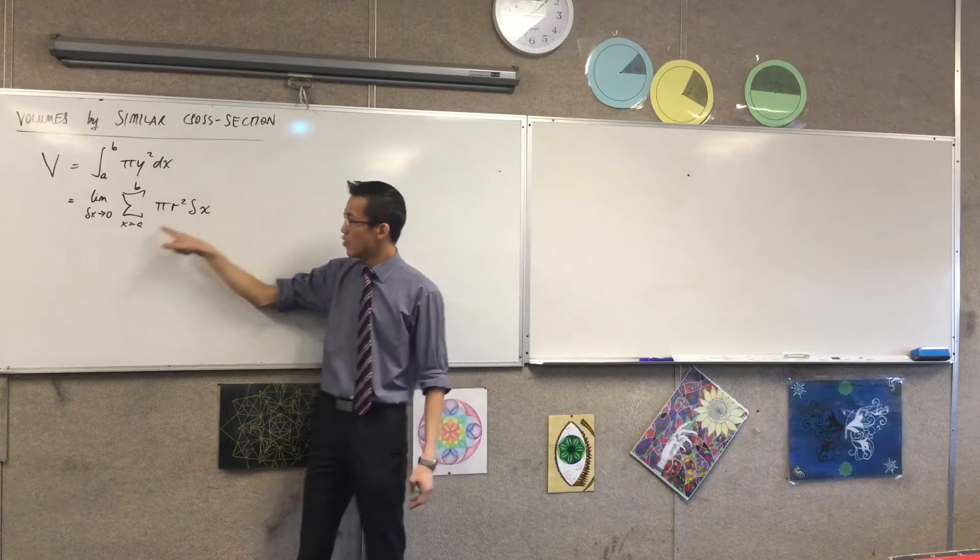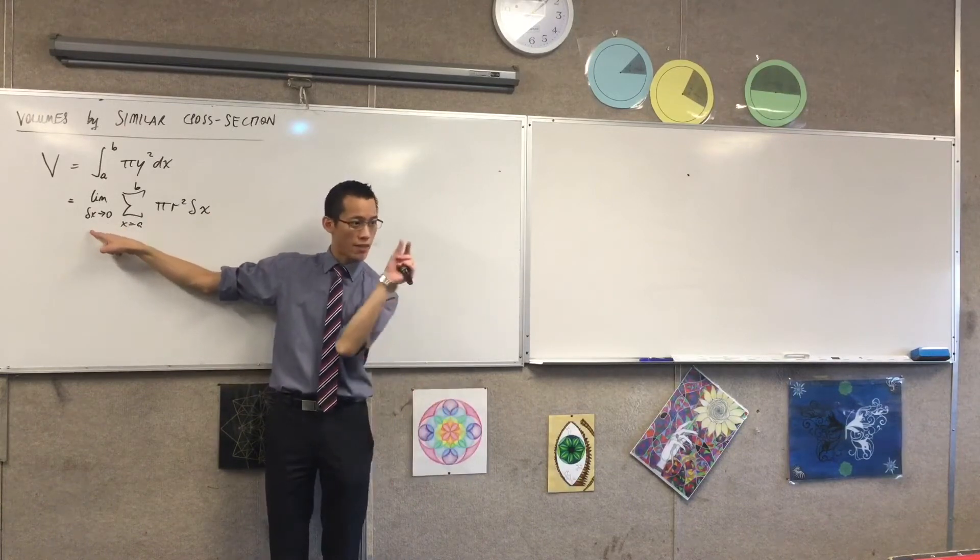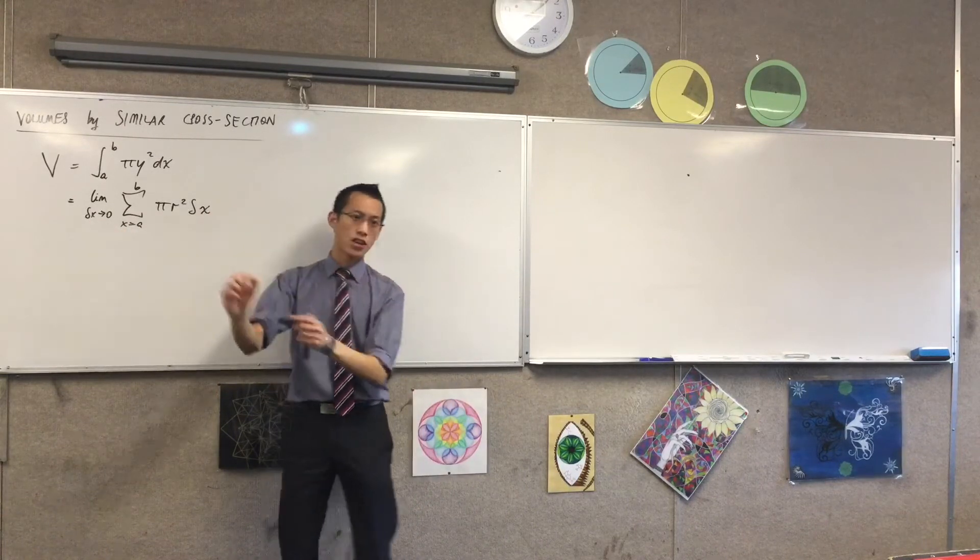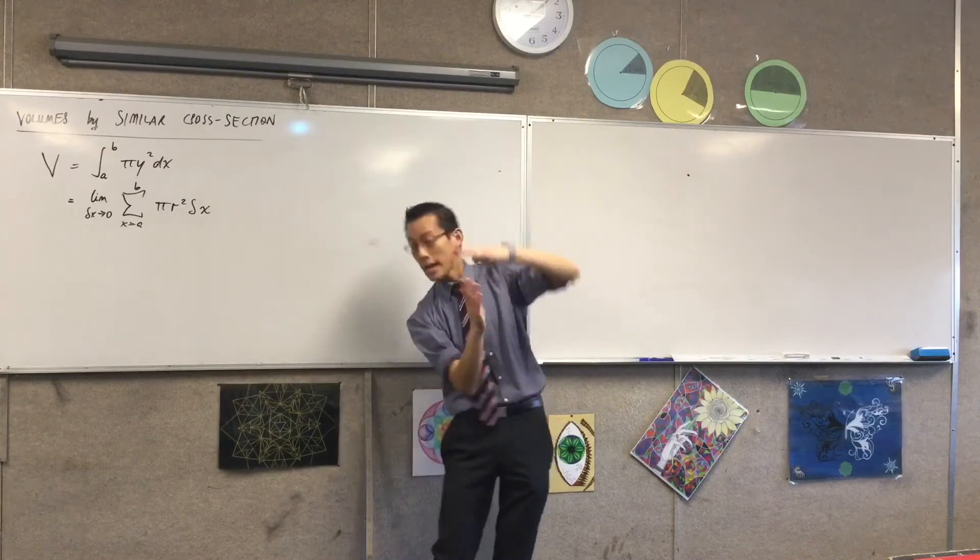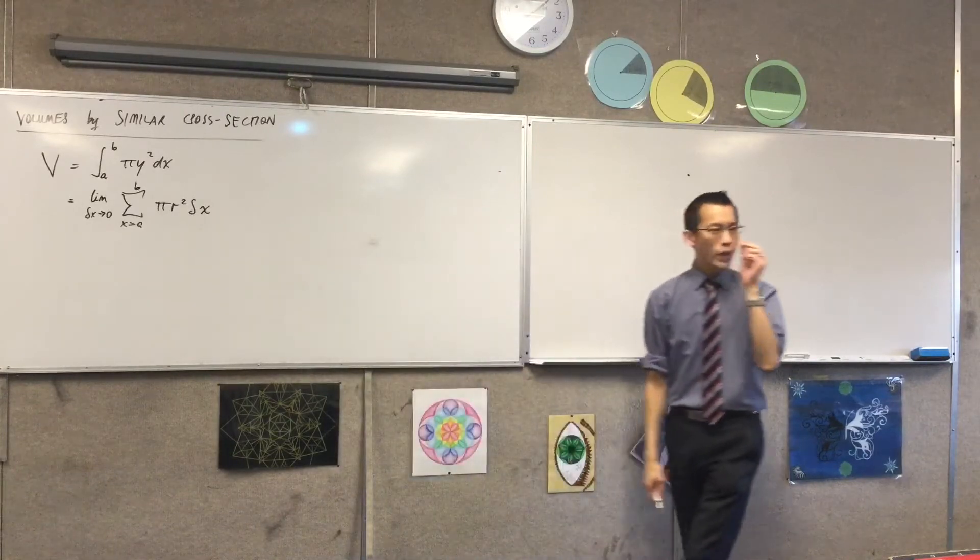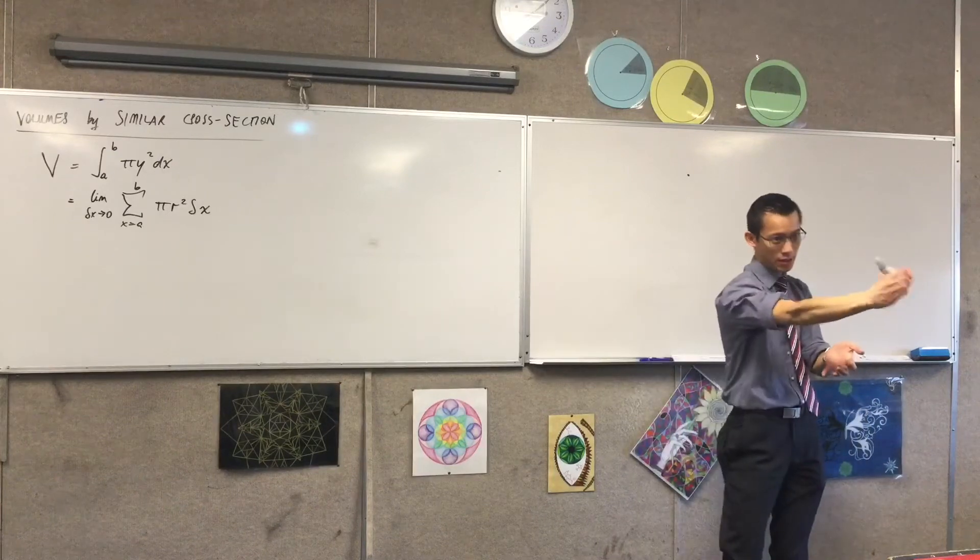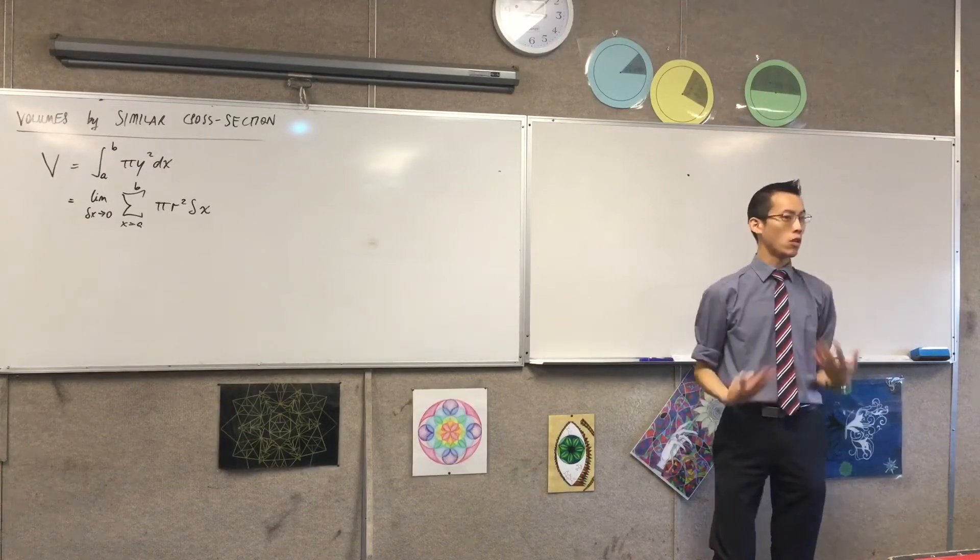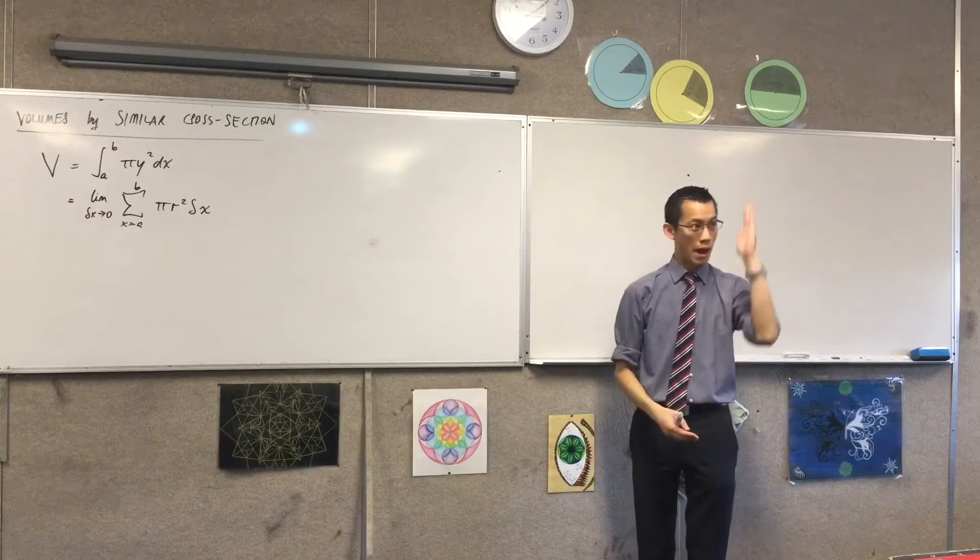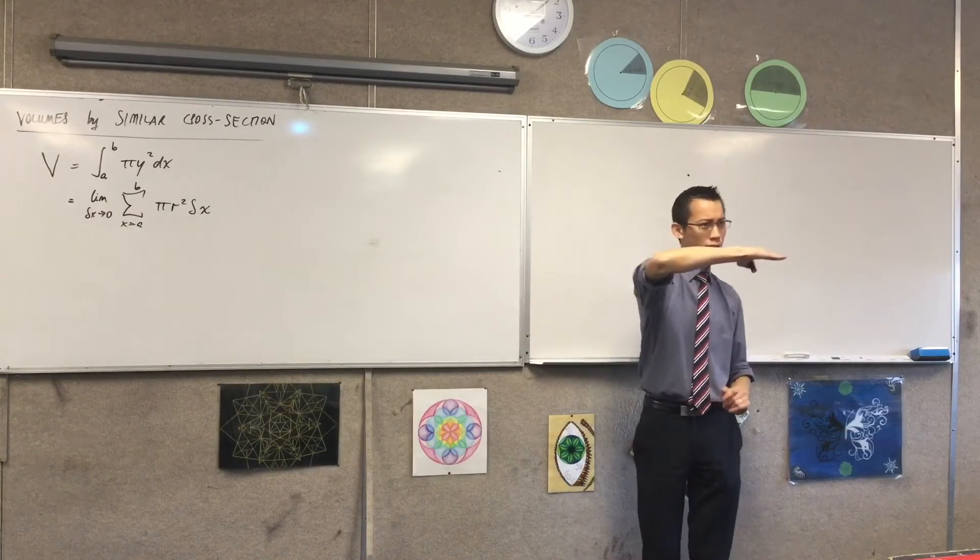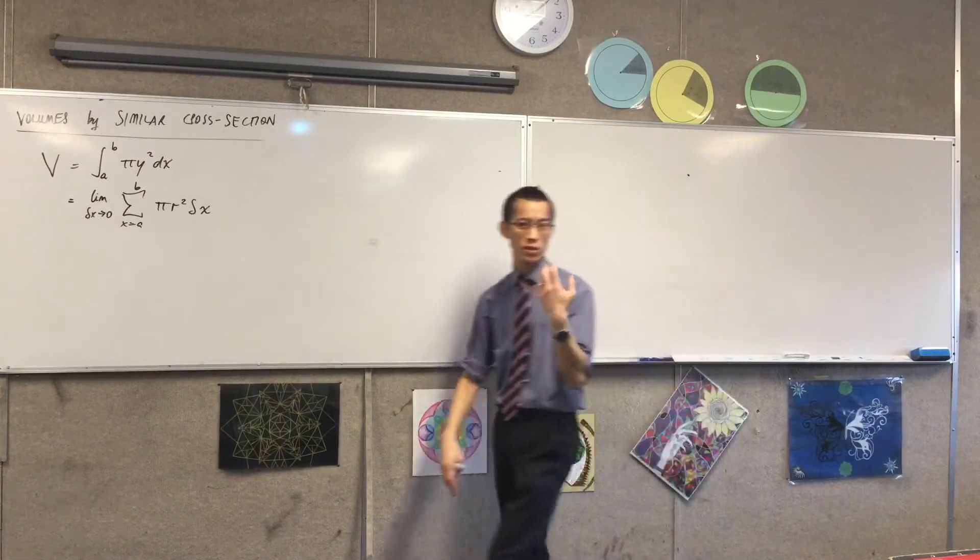the slices that you're adding up. You can have annular slices. You can change this. There's no reason why you have to be limited here or here. You can go off in any direction you like. You can go off at an angle. We saw, at the moment, this is just limited to slicing perpendicular to the axis of rotation. But if we want to, we can go parallel to the axis of rotation,